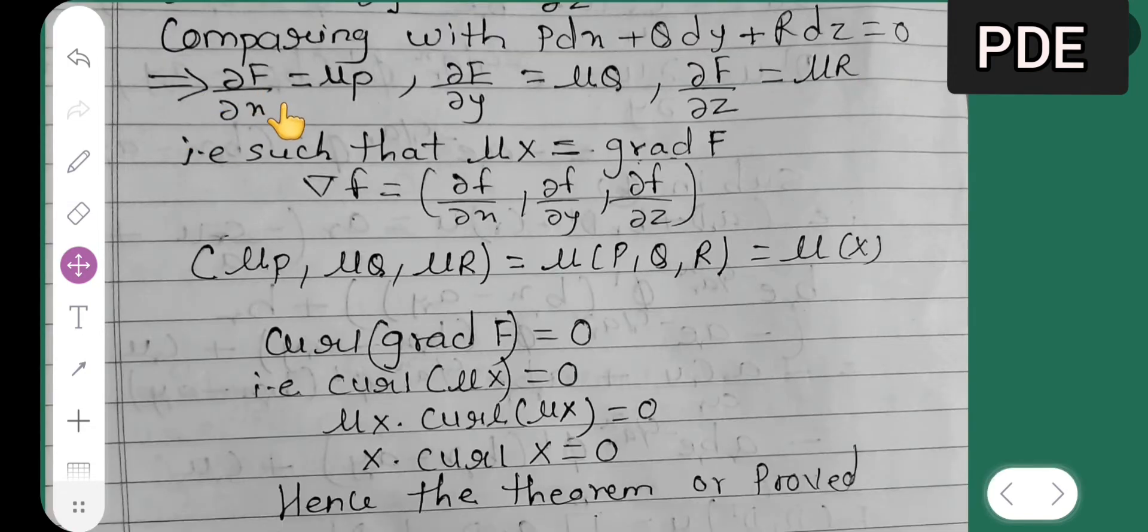Now this implies ∂f/∂x = μP, ∂f/∂y = μQ, ∂f/∂z = μR. That is, such that μX = grad f. Okay, grad f is equal to what? ∇f is equal to (∂f/∂x, ∂f/∂y, ∂f/∂z).